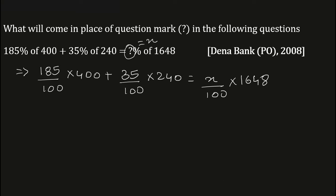Now simplify these terms. The zeros cancel out, giving us 185 × 4 plus (after simplification) 7 × 12.